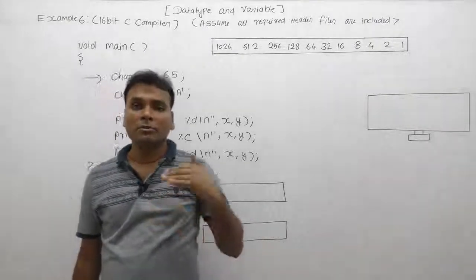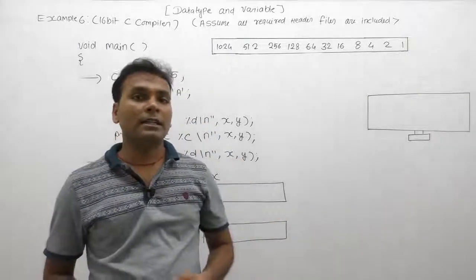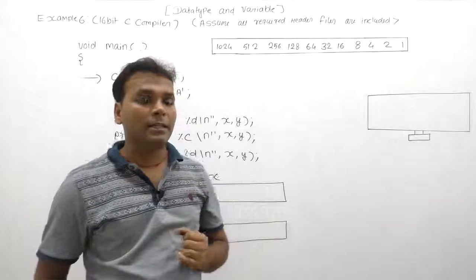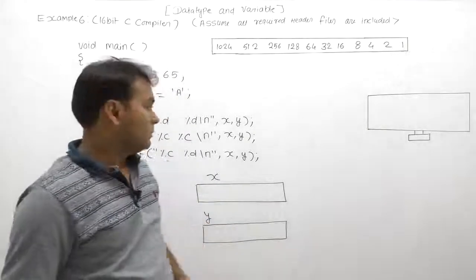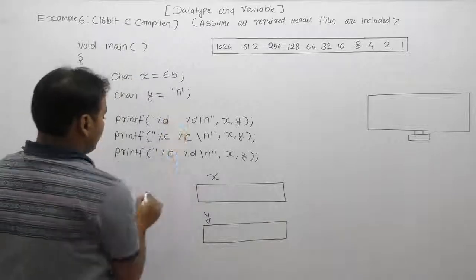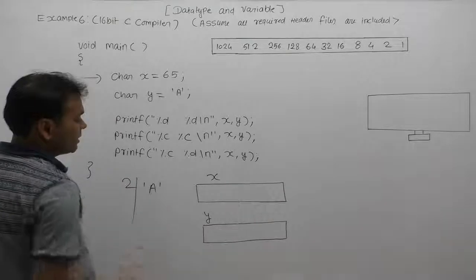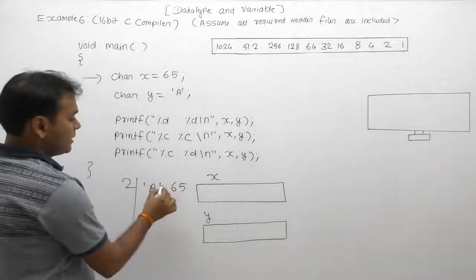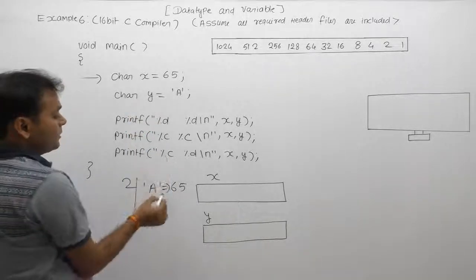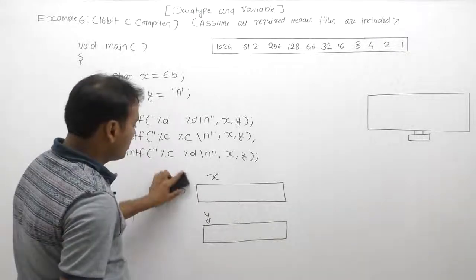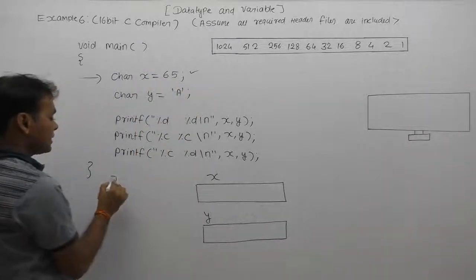As we discussed during the character set of C — in the character set case it was decided that whenever character type values are assigned to any variable in C language, and those characters are to be represented in memory, their ASCII values are used. When a character is to be represented in memory — like 'A' — we don't directly find its binary number; instead, we use its equivalent ASCII value. The ASCII value of capital A is 65. So whenever A is assigned, what is assigned in memory is the binary number of 65.